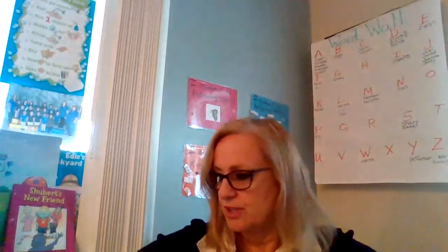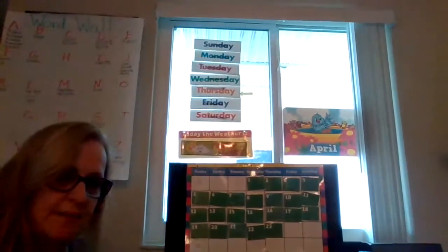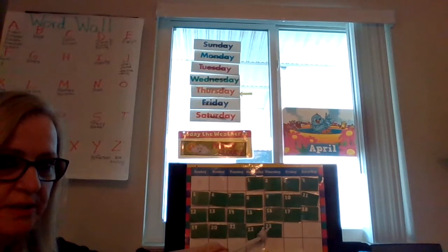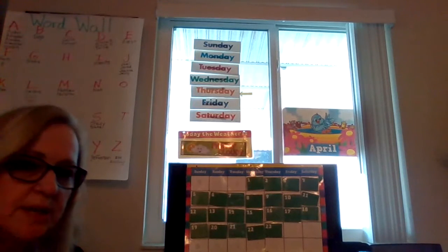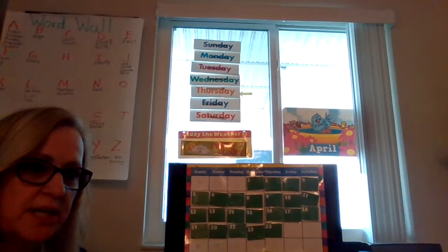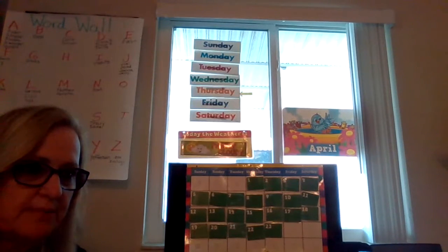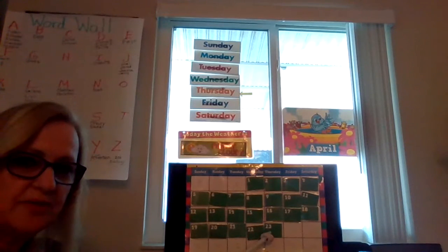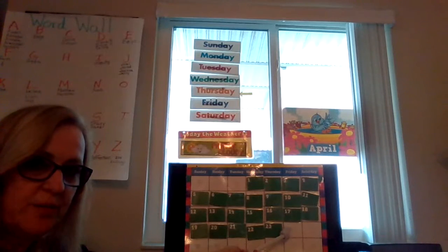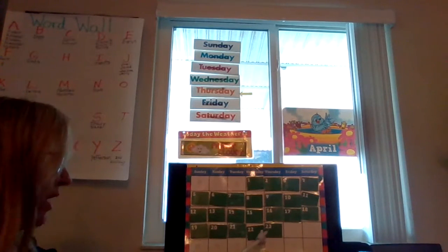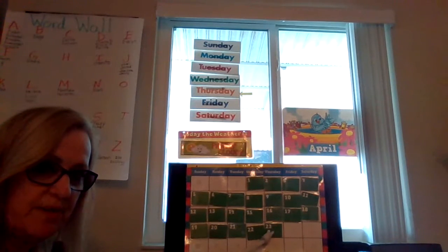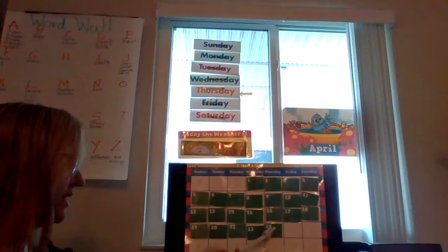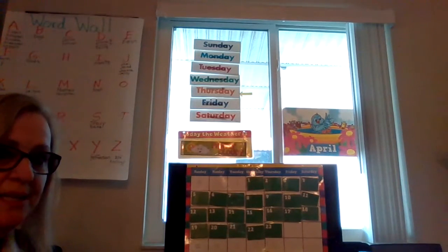So today is Thursday, like I said, and it is partly cloudy. It's still April, and it is the 23rd. If you can't count to 100, you can keep practicing. If you can count to 100, then you need to work on your adding and subtracting — everybody can work on that. So the 23rd: what comes after the 23rd? The 24th. What comes before the 23rd? The 22nd. So today is the 23rd, tomorrow is the 24th, and yesterday was the 22nd.